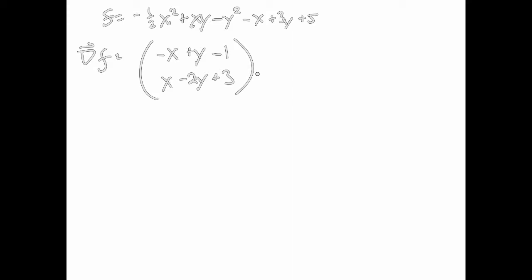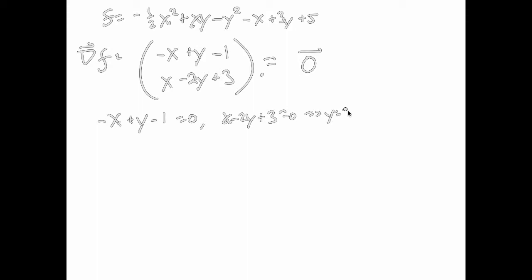So there's the gradient — that's step one. Step two: we take the gradient, set it equal to the zero vector, to find the critical points. We have two equations. We can solve them pretty quickly — if you add both equations together, the x terms cancel and you get negative y equals negative 2, so y equals 2. Plugging 2 into the first equation gives x equals 1.